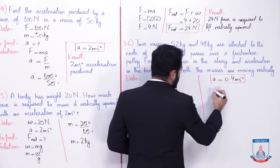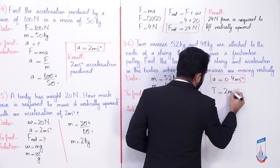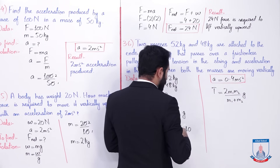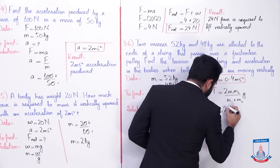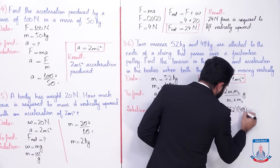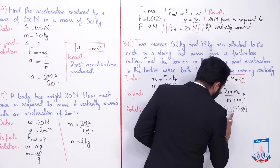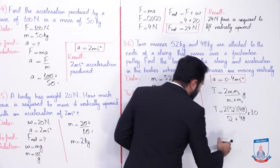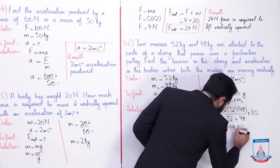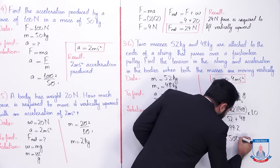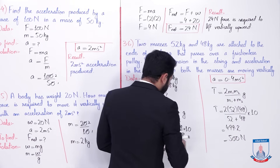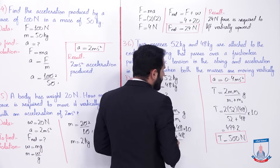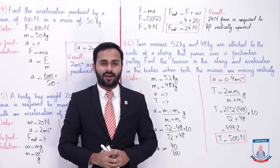Ab tension in the string find out karenge. Iska formula hota hai: T = 2m1m2 / (m1 + m2) × g. Values put karte hain: T = 2 × 52 × 48 / (52 + 48) × 10. Jab solve karenge to final answer aayega 499.2 newton, which is approximately equals to 500 newton. The final tension is equals to 500 newton. I hope the numericals aapko samaj aa gayi hongi. Apna bohat sara khiyal rakhna, take care, Allah hafiz.